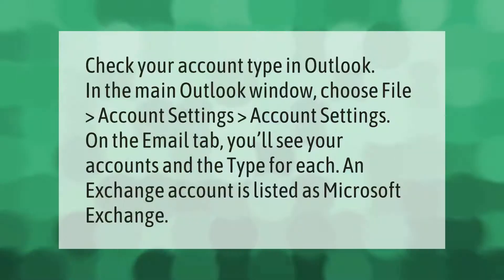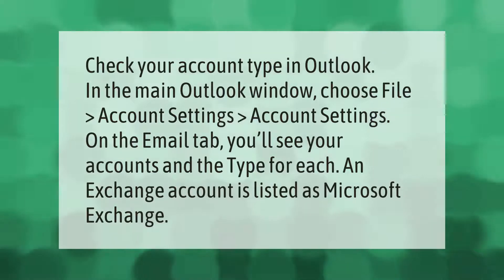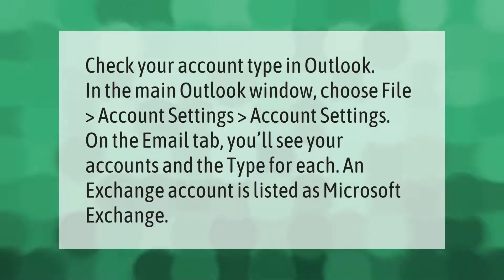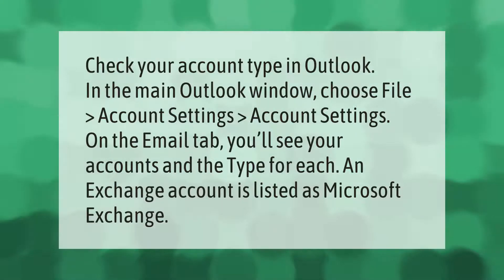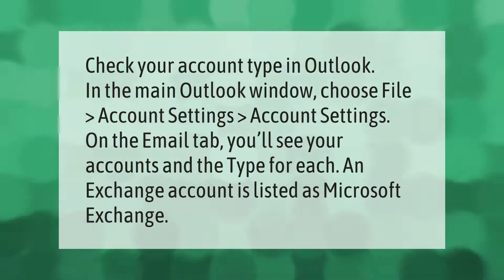To check your account type in Outlook, in the main Outlook window choose File, then Account Settings, then Account Settings again. On the Email tab you'll see your accounts and the type for each. An Exchange account is listed as Microsoft Exchange.